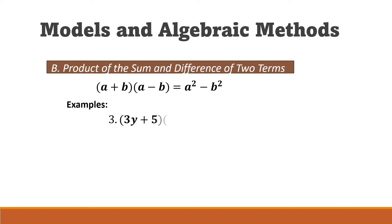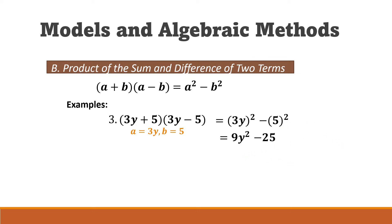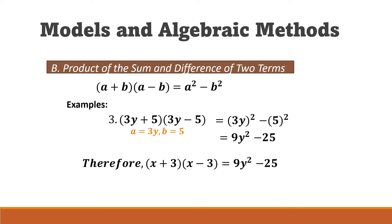For example three, we have (3y + 5)(3y − 5). The first term is 3y and the second term is 5. Using our model, we square both: (3y)² − (5)² = 9y² − 25. These methods are very useful because you don't have to use the FOIL method, which is a longer process.